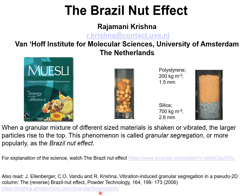I do another experiment in which I take a glass column and fill it with two types of materials: silica particles of 2.8 millimeters with a density of 700 kilograms per cubic meter, colored blue at the bottom, and smaller polystyrene particles with a lower density of 200 kilograms per cubic meter, colored yellow, at the top.